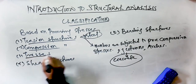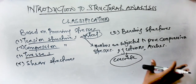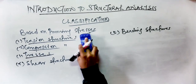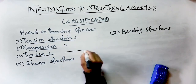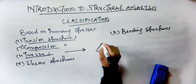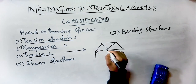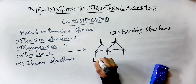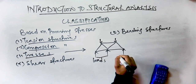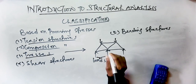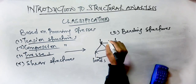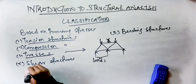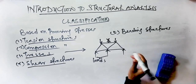Trusses are composed of straight members connected at their ends by hinged connections to form a stable configuration. When loads are applied to a truss only at the joints, its members are either in tension or compression. Loads are only applied at each joint — not on the members themselves. Here's an example of what a truss looks like.